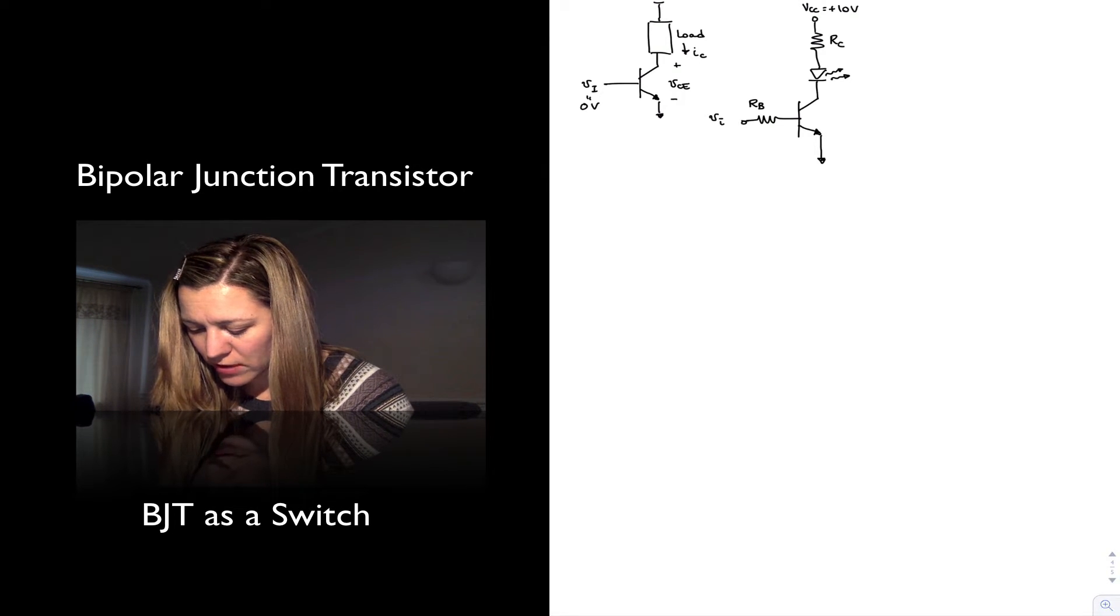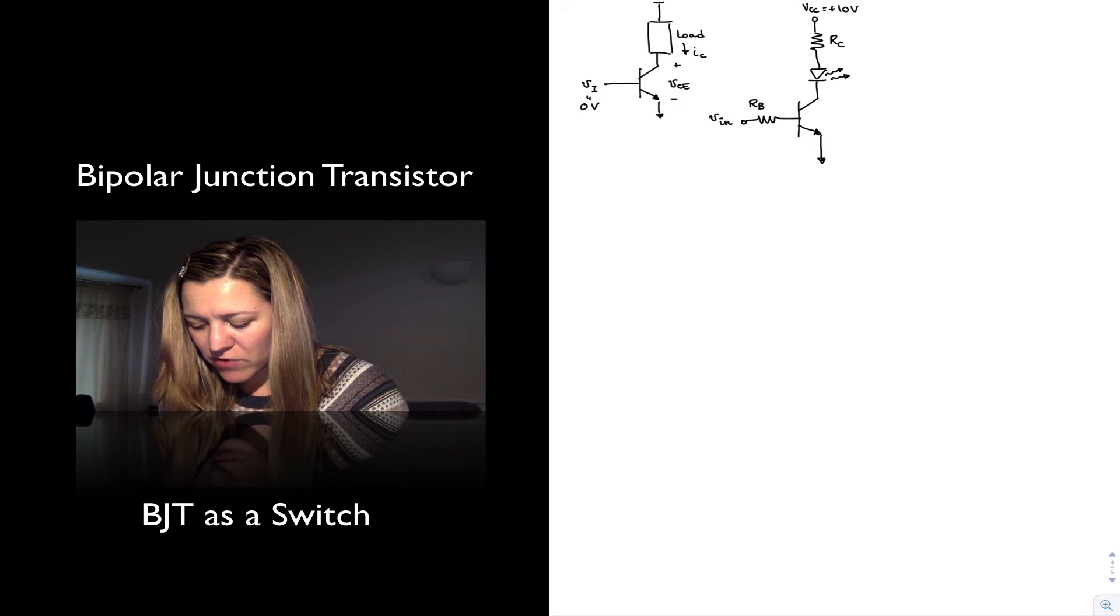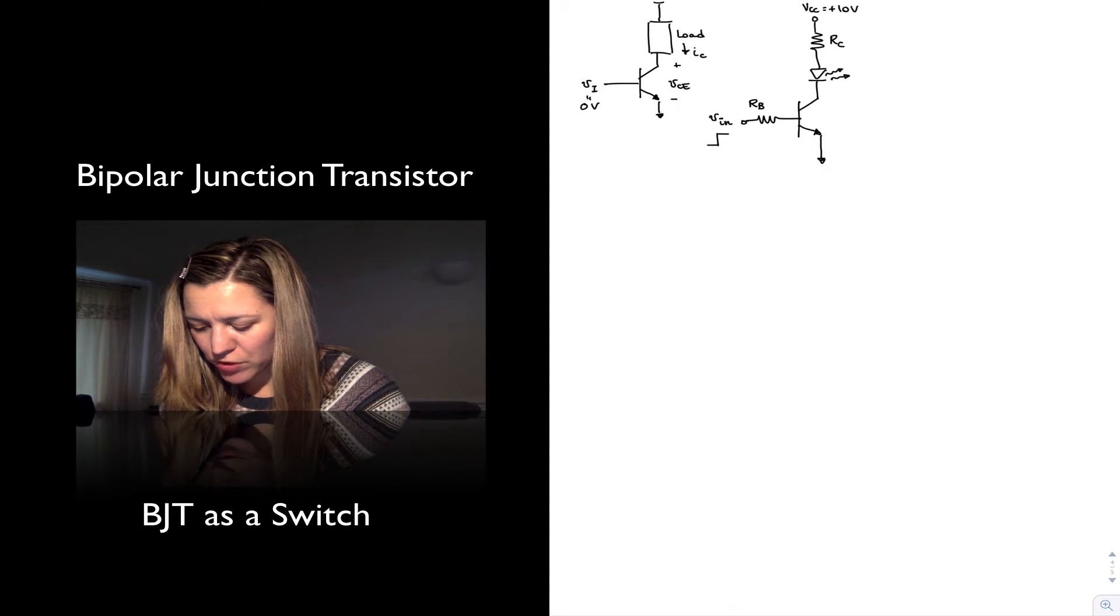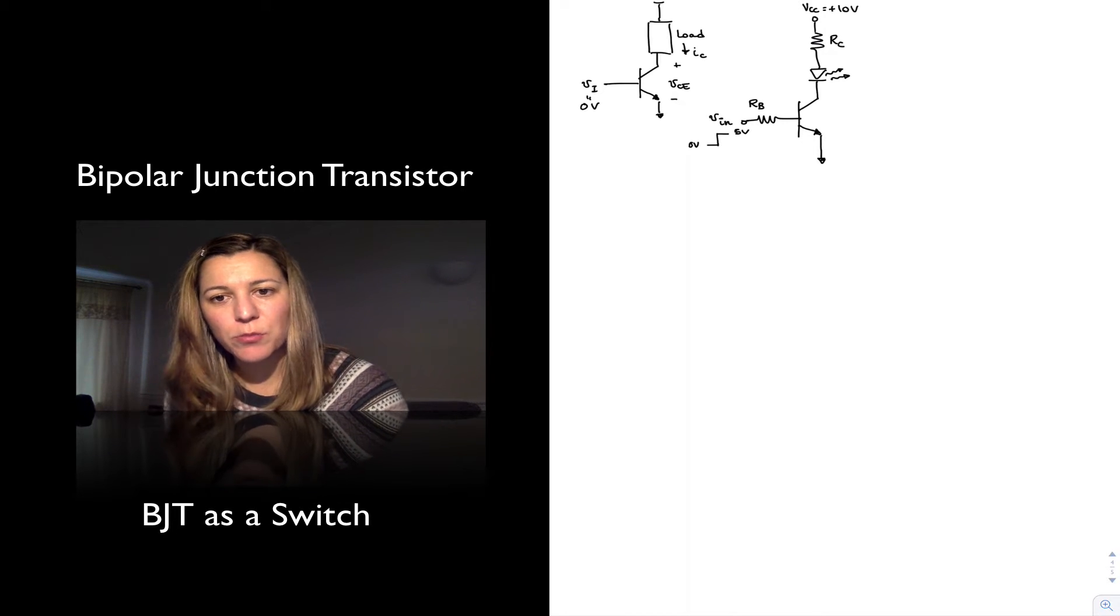This is my input voltage. I'll call it VIN. And let's say that my VIN is going to be switching from 0 volts to 5 volts. Those are my switch input levels.